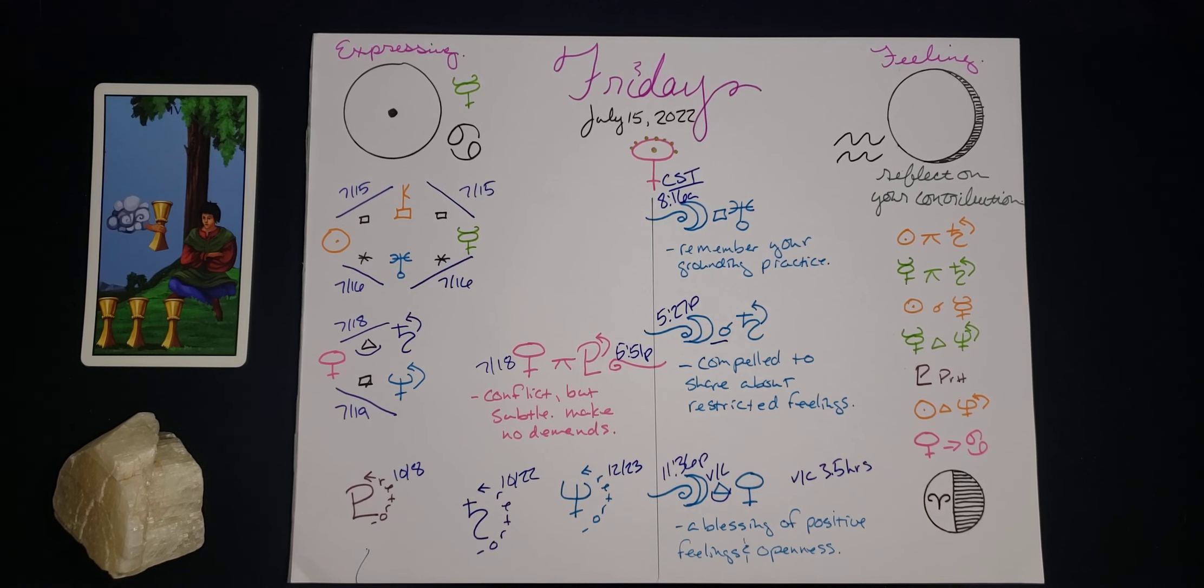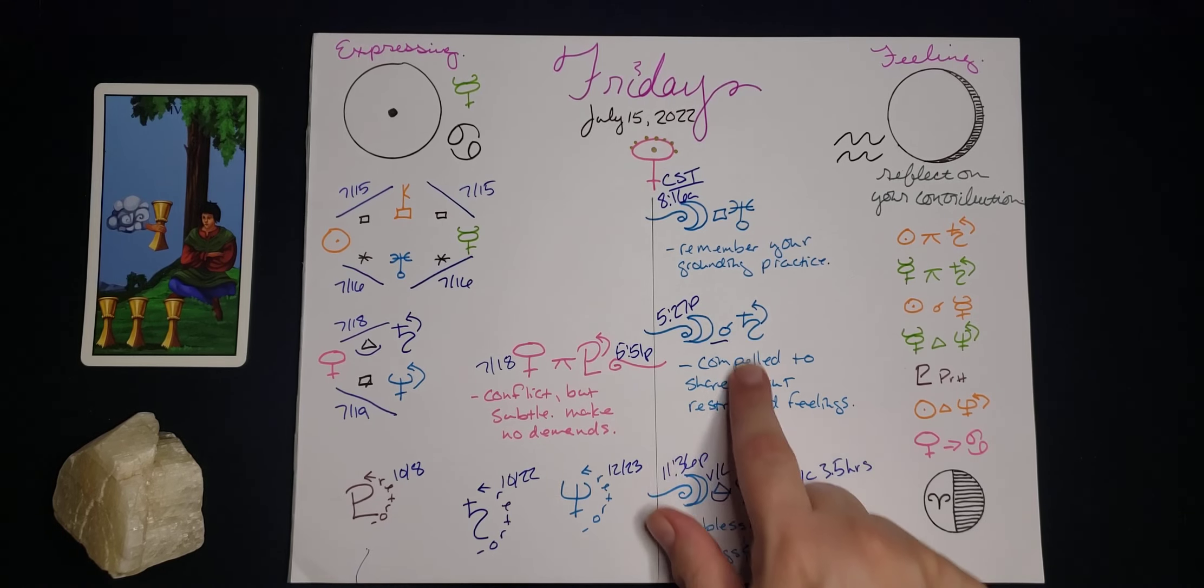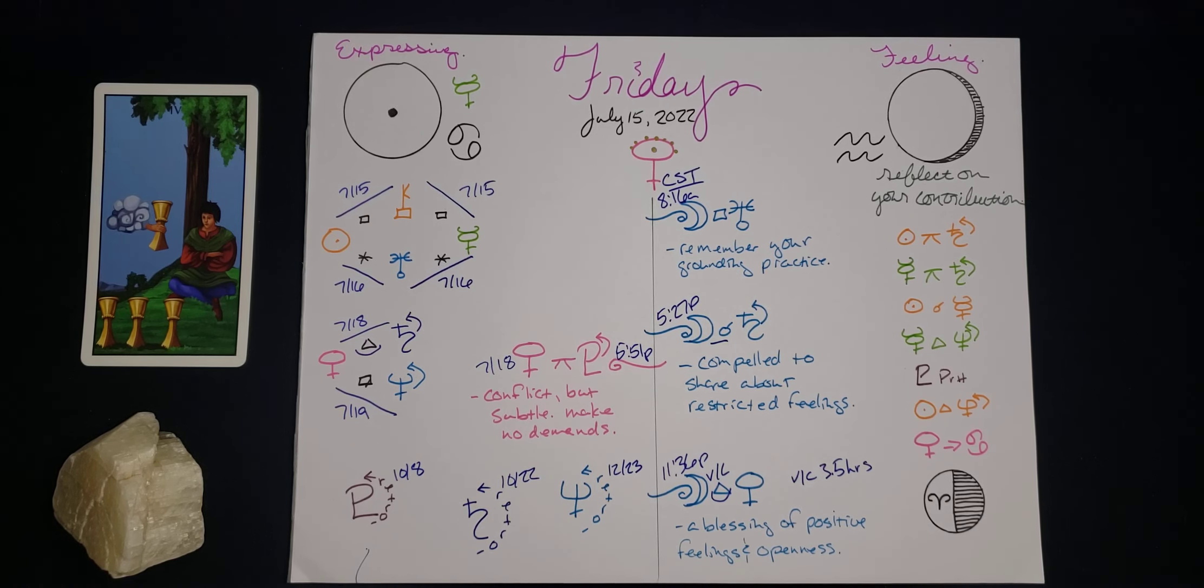Moon goes conjunct to Saturn this afternoon right around 5:30. And that conjunct is really intensification. It intensifies the feeling vibe and it intensifies the Saturn vibe, which is about structure, dedication, discipline. And when that's conjunct with the moon, it can be a little bit like a restricted feeling, like something is holding us back or keeping us from expressing ourselves. Kind of like that sun square Chiron, and that conjunct is almost compelling. So, it might be a time when we feel compelled to share about any feelings of restriction that are coming up for us.